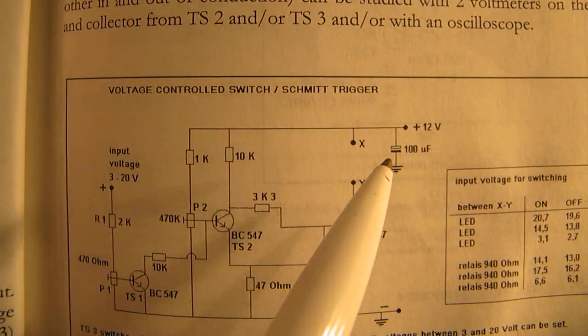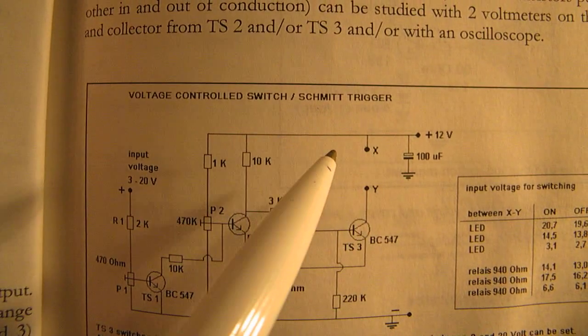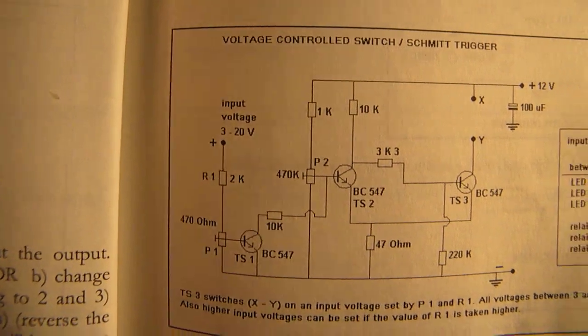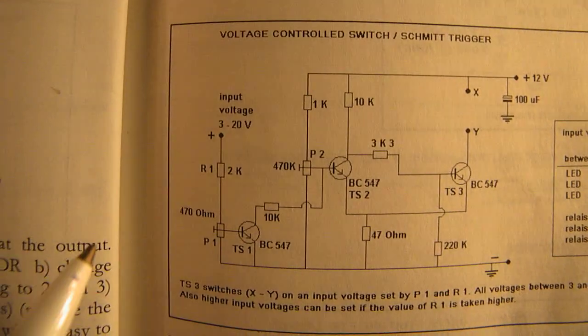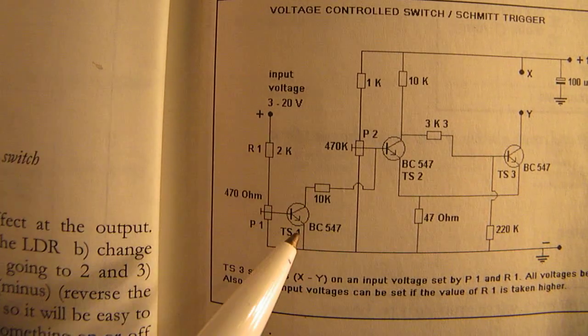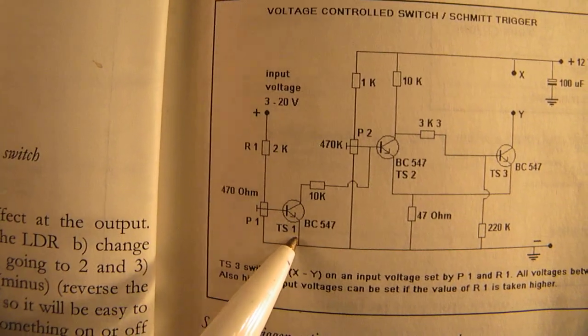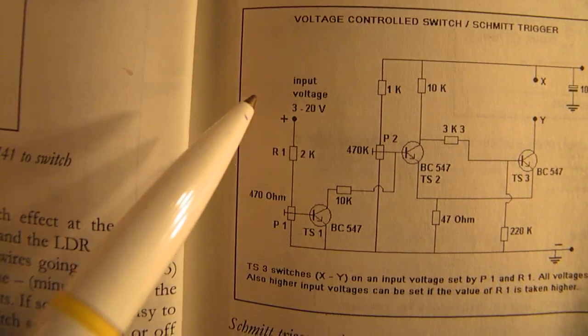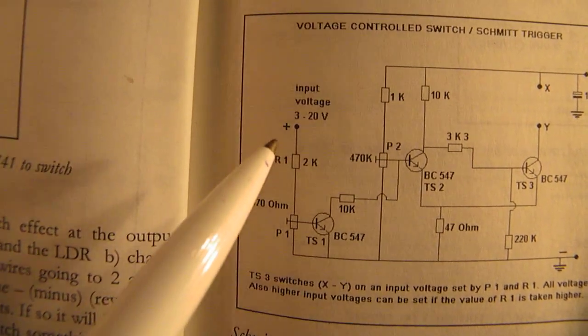When you connect a 940 ohm relay here, the circuit will switch very precisely when the voltage on the input of the first transistor goes higher than a certain value.